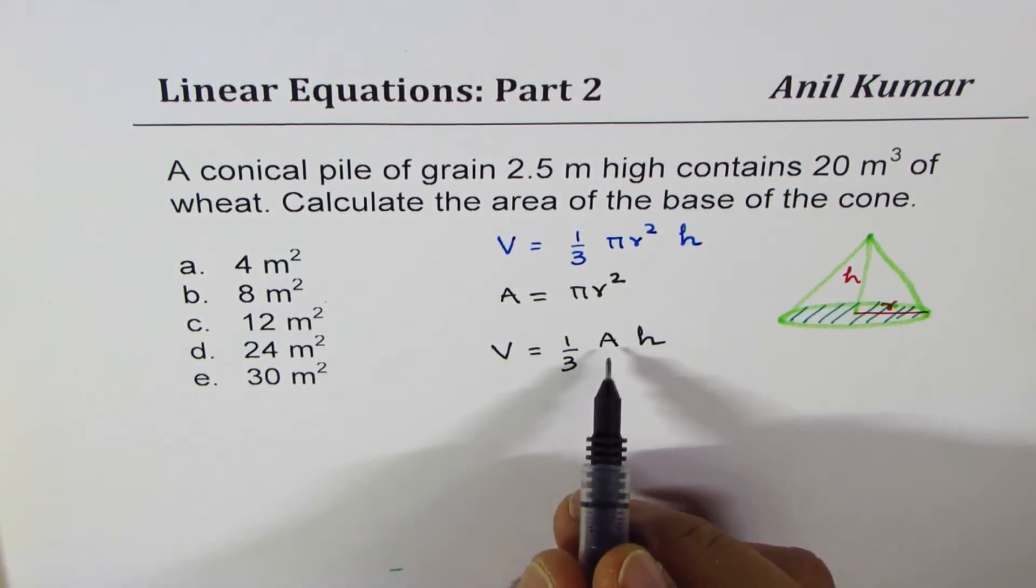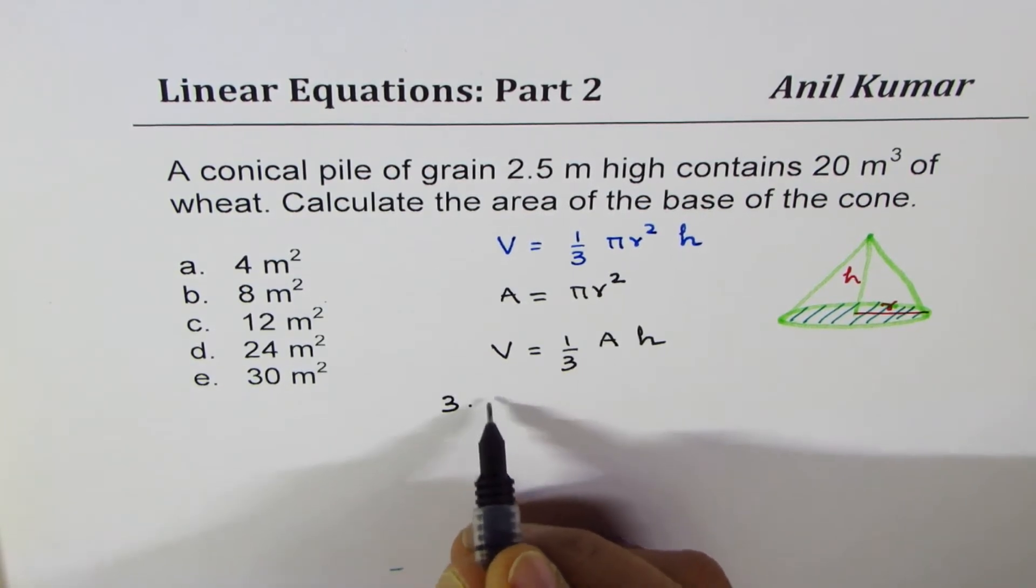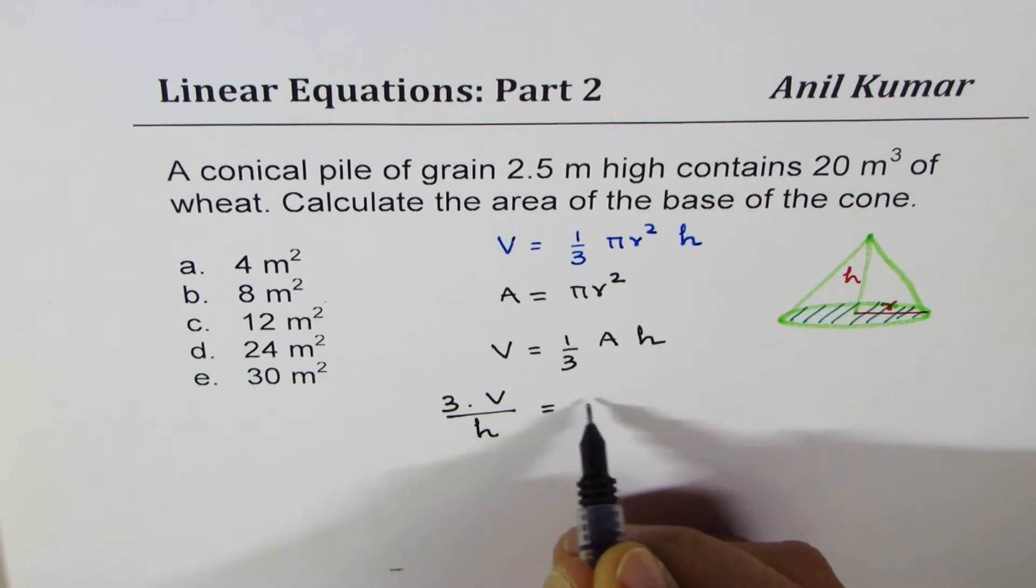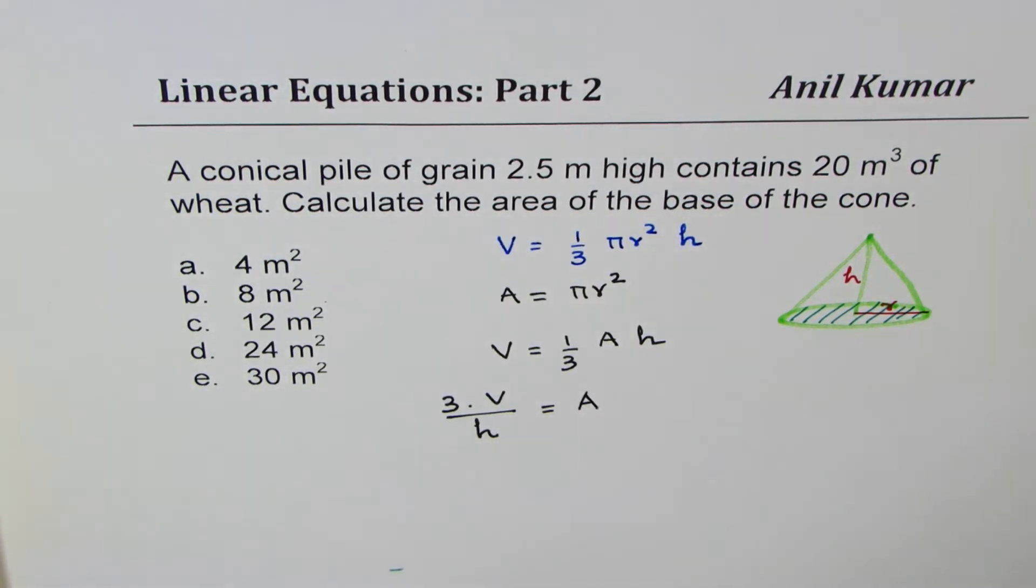You can rearrange to find A. So you have to do 3 times volume divided by height to get the area A of the base. We are given all the values, so we can now calculate.